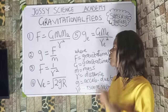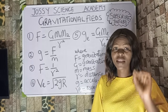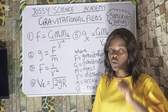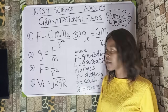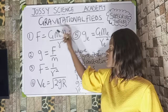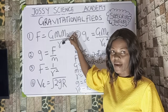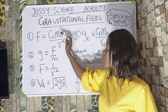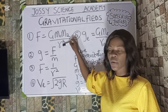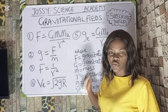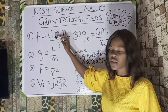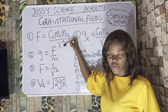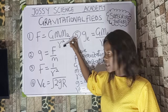The first topic we're going to look at is gravitational field. Under gravitational field, these are the formulas you need to know — they are compulsory. The first one is F equals G·M₁·M₂ over R squared. F is the gravitational force, G is the gravitational constant, M₁ and M₂ are the two masses, and R is the radius.